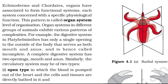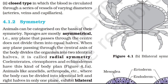Organ systems in different groups of animals exhibit various patterns of complexities. For example, the digestive system in Platyhelminthes has only a single opening to the outside of the body that serves as both mouth and anus, and is hence called incomplete. A complete digestive system has two openings: mouth and anus. The circulatory system may be of two types: open type, in which blood is pumped out of the heart and cells and tissues are directly bathed in it; and closed type, in which blood is circulated through a series of vessels of varying diameters — arteries, veins and capillaries.